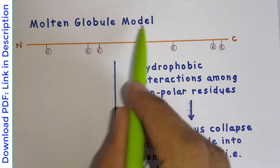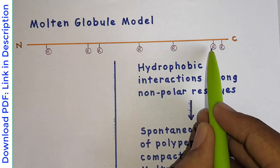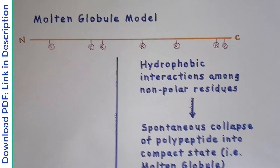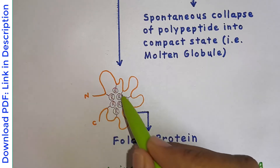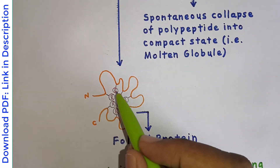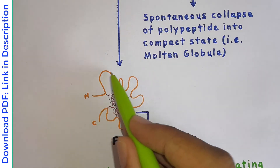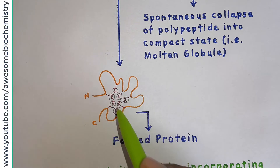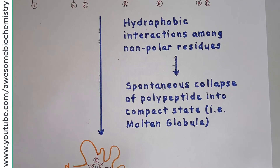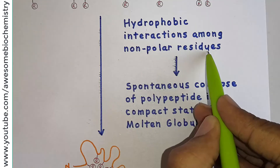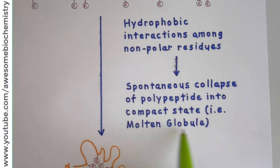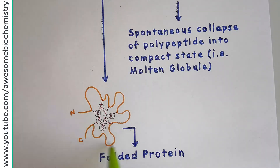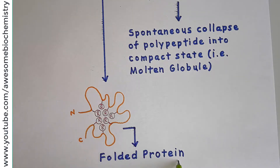In the molten globule model, all the non-polar side chain R groups interact with each other by hydrophobic interactions. Because of these hydrophobic interactions, the protein backbone folds into a three-dimensional arrangement. Hydrophobic interactions among non-polar residues lead to a spontaneous collapse of the polypeptide into a compact state, which is known as the molten globule. Once the molten globule forms, it can further fold and give rise to the completely folded protein.